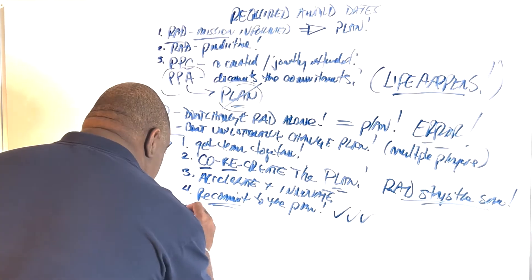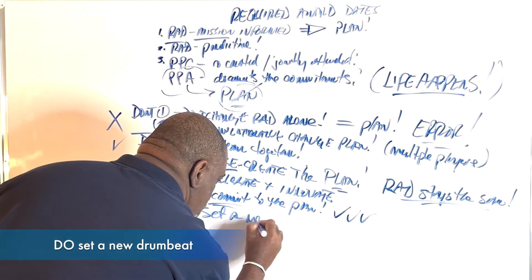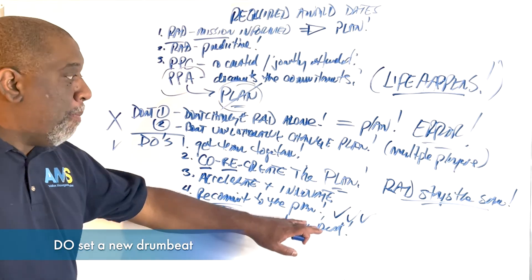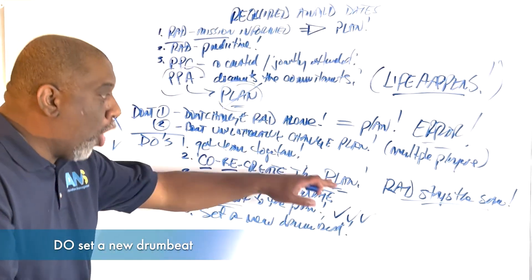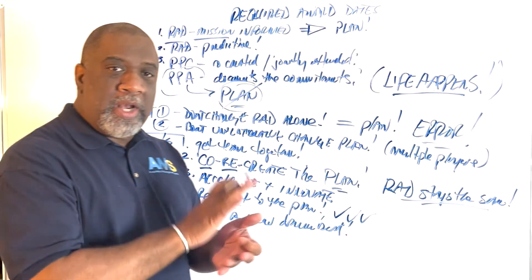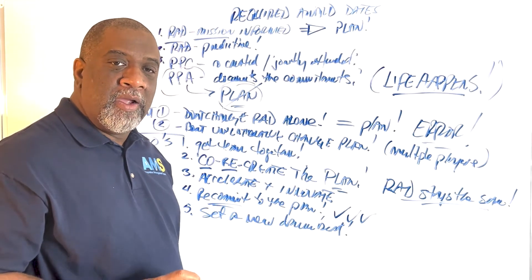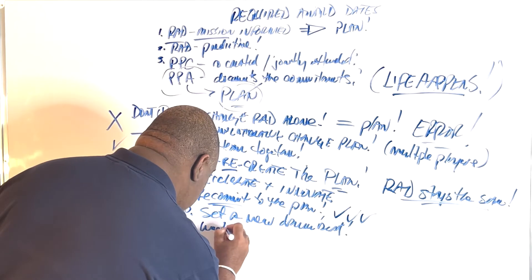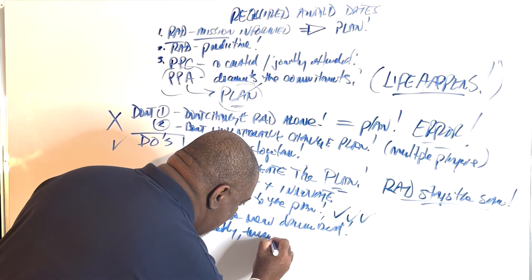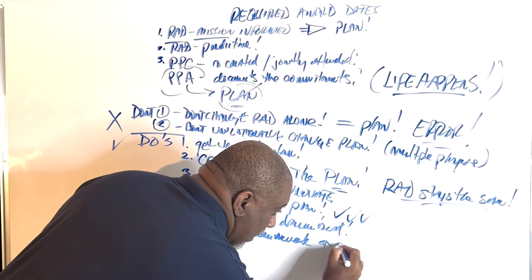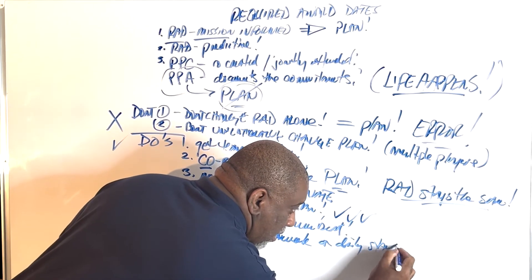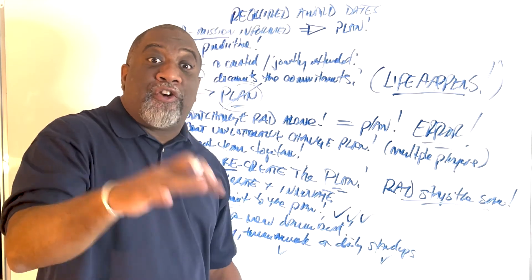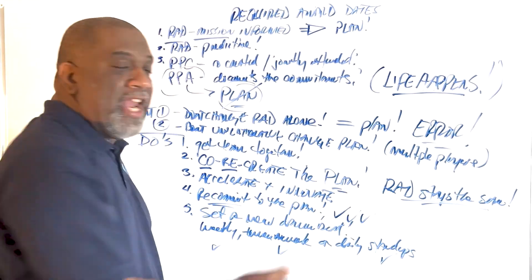And then last, but certainly not least, set a new drum beat. Maybe when you do this analysis, the forensics on the old plan, you'll see that we didn't have enough touches in there for the team, enough status. So you've got to set a new drum beat, whether that's weekly, whether that's twice a week, or daily stand-ups. All are good. It doesn't matter. Whatever is necessary to get the new plan in place, do that.